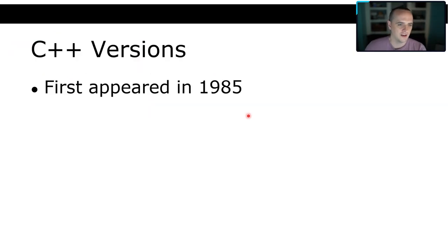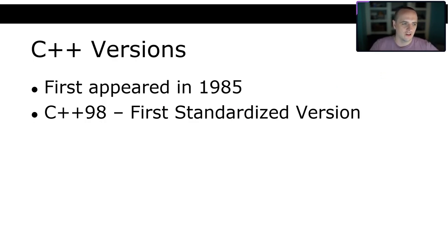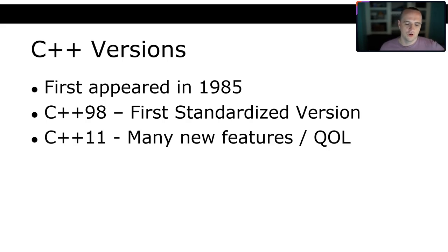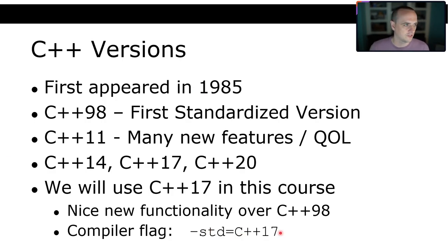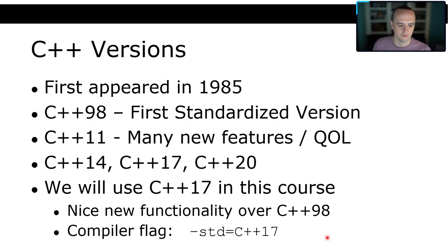C++ first appeared in 1985, and there have been lots of versions since. C++98 was the first standardized version, and many of those bad quotations are about C++98. C++11 was fantastic — it had so many new features and quality-of-life improvements that made the language so much easier. Since then there's been C++14, 17, and 20. For this course, we will be using C++17, since it's supported in basically every compiler now.